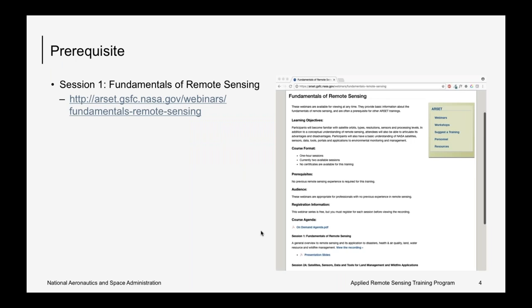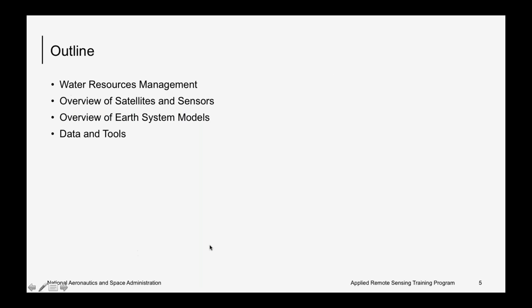All ARSET materials are available from the ARSET website. The current webinar is session 2, one of the introductory webinar sessions, following session 1 on the fundamentals of remote sensing. There is also a companion webinar, also session 2, that focuses on land management and wildfire. Session 1 is recommended as a prerequisite for all ARSET webinars. These three sessions — fundamentals, water resources, and land management — will be available online and can be viewed at any time, designed to provide basic information useful for taking more advanced webinars offered by ARSET.